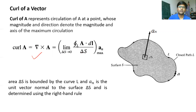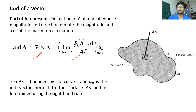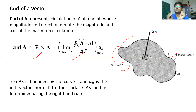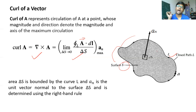Mathematically, curl can be represented using this formula and is denoted by del cross A. In integral terms, it is equivalent to the closed line integral of the circulating vector A with respect to area, and that area must be shrinking towards zero so that it becomes a point. This is a closed contour L, and the surface area S is bounded by it. The curl of vector A on this closed area represents the circulation around closed path L, with the condition that surface area delta S is decreasing towards zero. The direction of curl is represented by the normal to that surface.